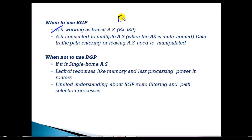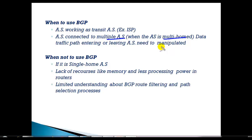In case my company decides to run BGP even though it's not an ISP, it is really recommended if you have multiple autonomous systems and you are connecting to multiple AS numbers — what we call a multi-homing environment — and where you need to do some path manipulations. Let me take one simple scenario to understand this second point about when BGP is more appropriate to use.